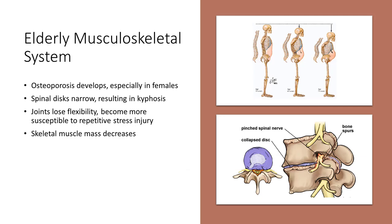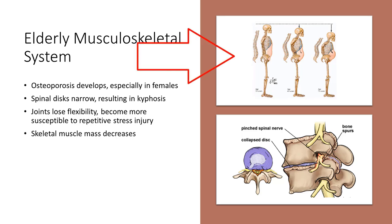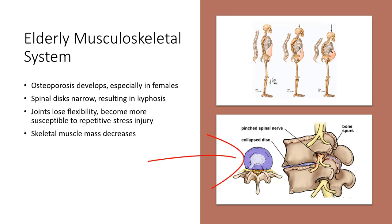Let's review the elderly musculoskeletal system and the osteoporosis that develops, especially in females, after menopause and losing the hormone estrogen. Your spinal discs are narrowing, resulting in a kyphosis or a forward bending curve of the back. The joints are losing their flexibility, becoming more unstable and subject to stress injuries. The skeletal muscle mass decreases around the spine itself. With a weakened bone structure, the vertebra start to collapse, pressing in on the disc space in between and causing the disc to rupture. The nucleus pulposus — the soft center of the disc — ruptures and pushes towards the spinal cord, resulting in a ruptured disc impinging on the spinal cord.